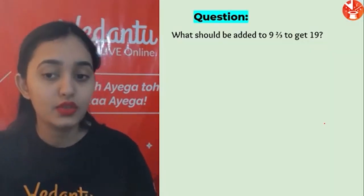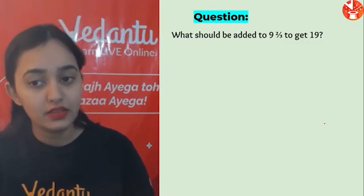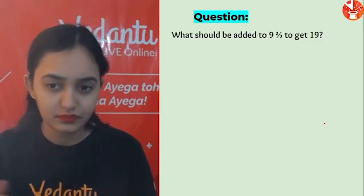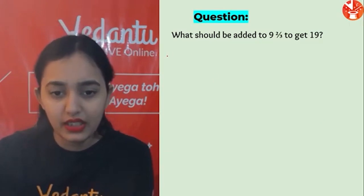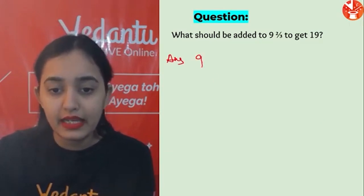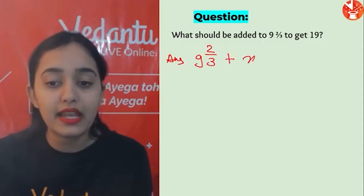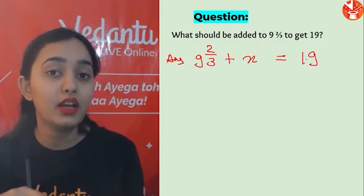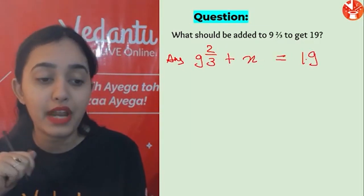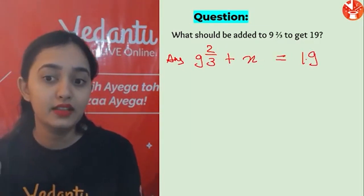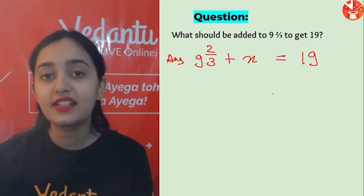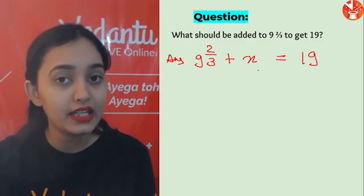Next: what should be added to 9 2/3 to get 19? Suppose x should be added. To find x, we use subtraction: x = 19 − 9 2/3, because transposition mein jab yeh is side aayega, subtract ho jaayega.